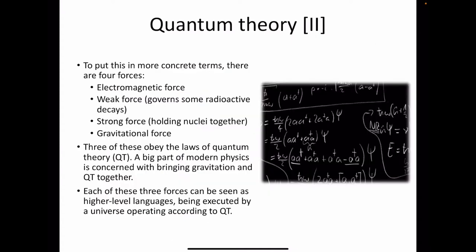To put this in more concrete terms, we have four forces in the universe that we currently understand: the electromagnetic force — all the light we see, including X-rays, gamma rays, radio waves, microwaves; the weak force, which governs some forms of radioactive decay; the strong force, which holds nuclei together; and the gravitational force. For the first three of these we have a theory in place; for the fourth we don't. There are challenges unifying general relativity and quantum theory — one reason is that quantum theory is discrete.